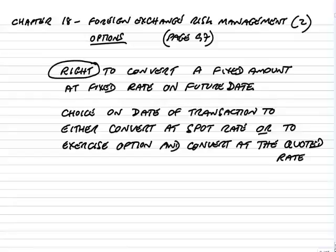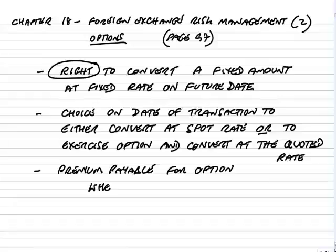It's our choice on the date of the transaction to either convert at the spot rate, or to exercise the option and convert at the fixed or quoted rate. When it comes to the date of the transaction, you make the choice. If the spot rate's better, you convert at spot and throw away the option. But if the option rate's better, you use the option and convert at that fixed rate. The downside, though, is that because you can only win and can't lose, there's a premium payable for the option, whether or not you use it.